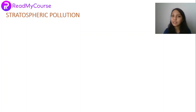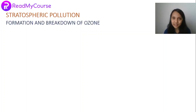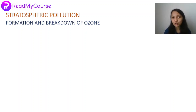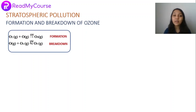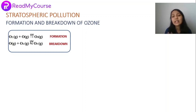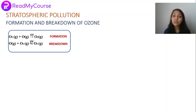Next, we discuss stratospheric pollution — the formation and breakdown of ozone. The stratosphere has a layer of ozone (O3). When UV radiation from the sun strikes an O2 molecule, it reacts with an oxygen atom to form O3 — ozone. This ozone molecule is highly unstable and breaks down into its components: an O2 molecule and an oxygen atom. This ozone layer is what prevents harmful UV radiation from reaching Earth's surface. UV radiation causes skin cancer and many other harmful side effects.